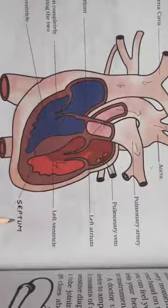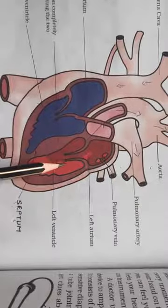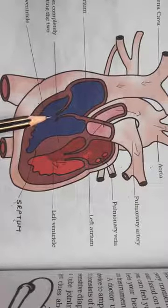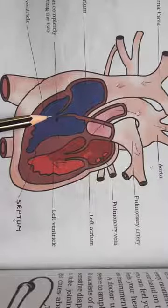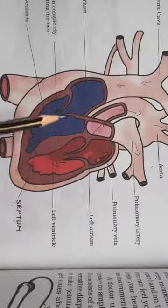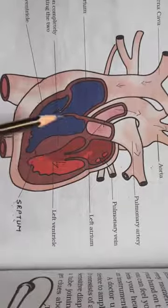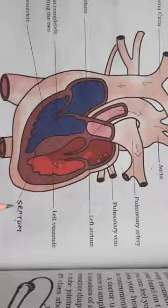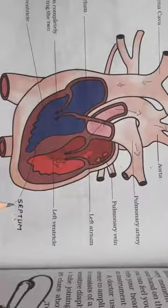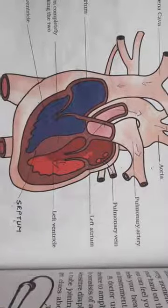The septum does not allow the oxygenated blood and the deoxygenated blood to mix with each other. In the heart, the oxygenated blood and the deoxygenated blood remain separate because of this thin wall which is called the septum.